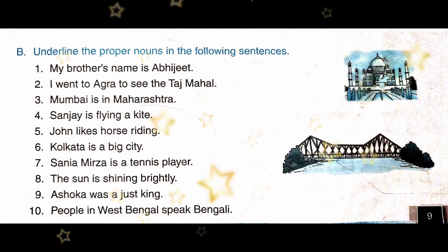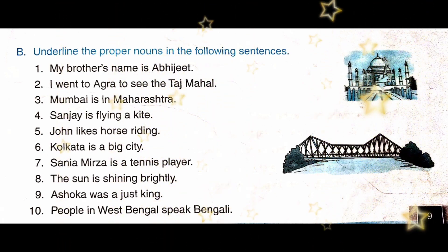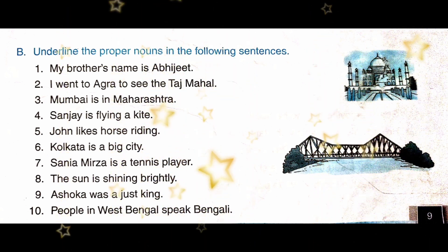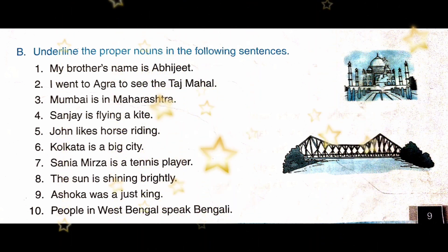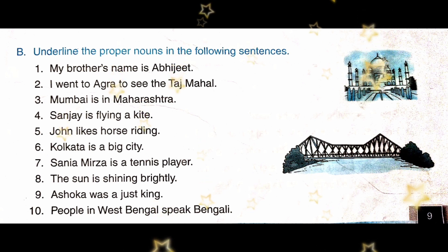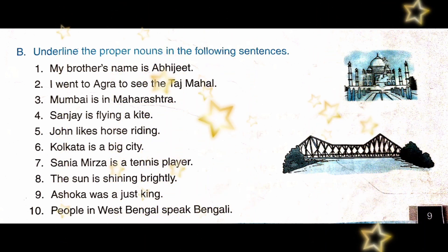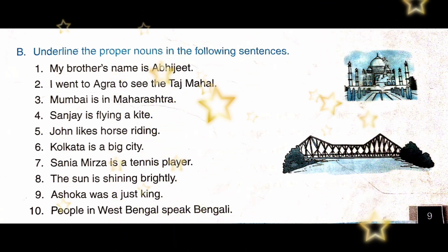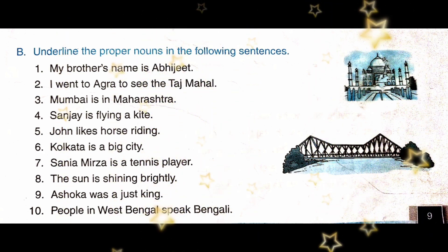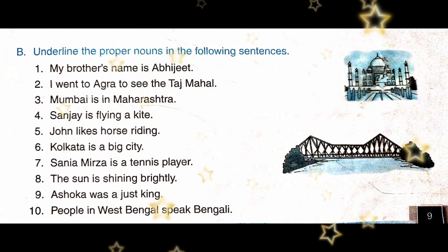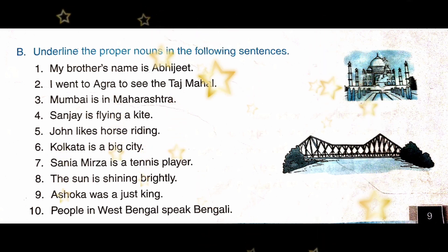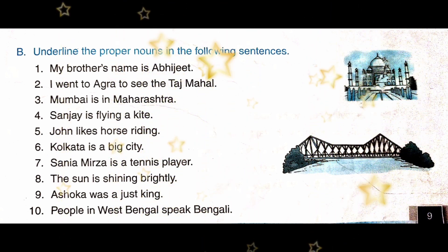Let us solve some exercises from your book. First one: underline the proper nouns in the following sentences. There are two rules I had told you in our previous class. First, proper nouns always begin with capital letters. Second, proper nouns means the name for a particular person, place, animal or thing.